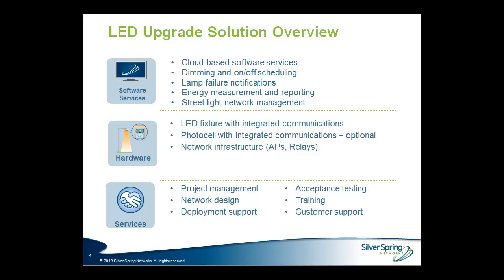The other option is a photocell with Silver Spring's integrated communications module, turning the photocell into a communicating node on the mesh network. This is useful in retrofit scenarios where non-communicating LED lights are already deployed and need to be converted to communicating nodes. Alongside both hardware options, network infrastructure components such as access points and relays create the network fabric. The third component is the services that ensure successful deployment and ongoing network management.